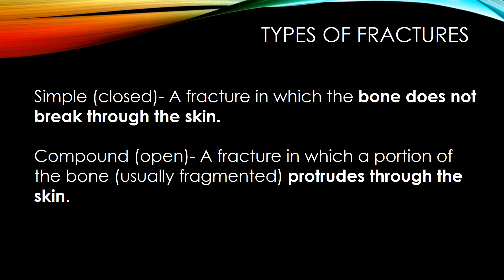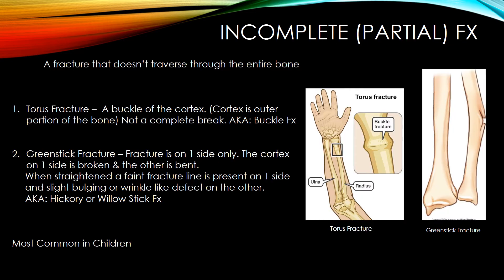Types of fractures. A simple, closed fracture is a fracture of the bone that does not break through the skin. A compound or open fracture is one in which a portion of bone, usually a fragment, protrudes through the skin. An incomplete or partial fracture does not traverse through the entire bone. A torus fracture is a buckle of the cortex — the outer portion of the bone — not a complete break, also known as a buckle fracture.